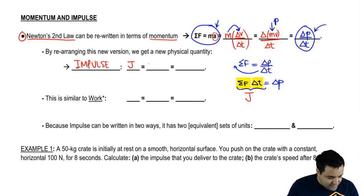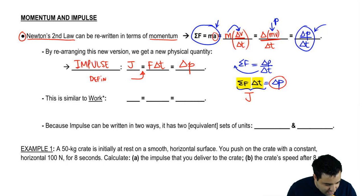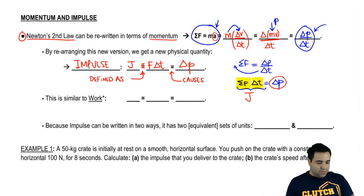So J is defined as F delta t, and it causes a change in momentum. So that's sort of the full equation for J. It's going to get a little bit longer in just a bit. But I want to make a quick point here that J is defined as, that's the definition of J. Sometimes definitions are shown in terms of like a three dash equals sign. It's equal to and defined as. But it causes a change in momentum. So impulse is force times time, and it causes a change in momentum.